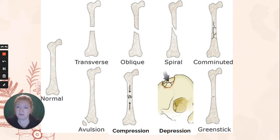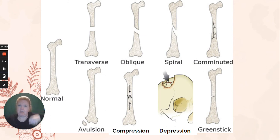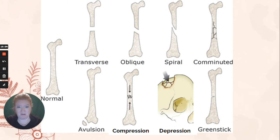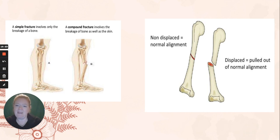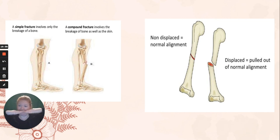Let's look at all the fractures. Normal bone. Transverse: straight across. Oblique: at an angle — could be downward, could be upward, doesn't matter. Spiral: that jagged break from a twist. Comminuted: a whole bunch of pieces. Avulsion: a piece of the bone actually torn away. Compression: usually in the vertebrae, but it can happen in other bones. Depression: in the skull. Greenstick: bend on one side, break on the other. A simple fracture doesn't break the skin; a compound fracture does break the skin. Simple is also called closed; compound is also called open. Each fracture could also be displaced or non-displaced. Displaced means out of alignment; non-displaced means they're still lined up even though the bone is broken.